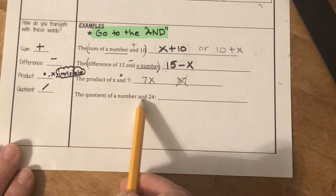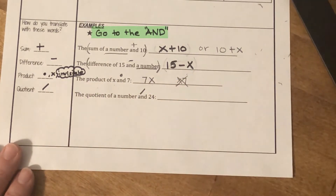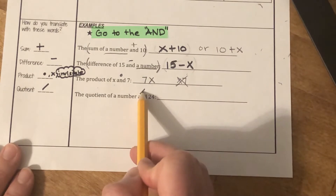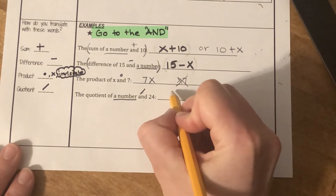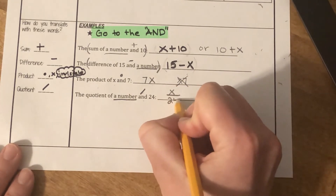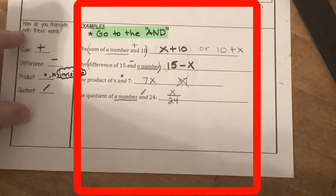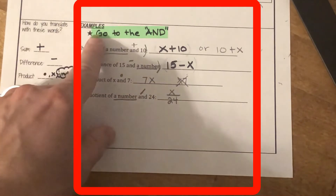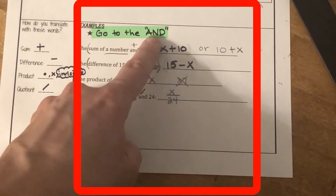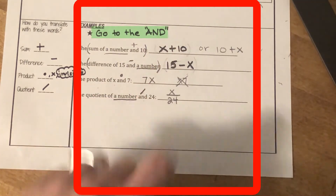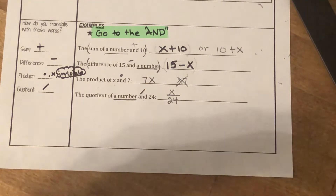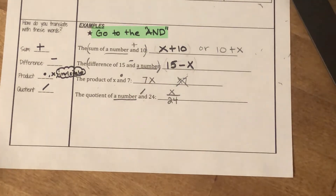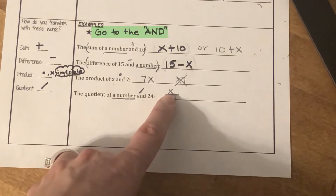The quotient of a number and 24: quotient means divide, so we use the fraction bar. 'And' translates to the division symbol. We can't pick any number we want — we use a variable. So the translation is the variable over 24 using a fraction bar. When using professional words for operations, go to the 'and.' For multiplication, use invisible multiplication. For division, use the fraction bar. Avoid using the X symbol for multiplication since it might be confused with the variable X.